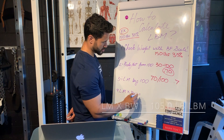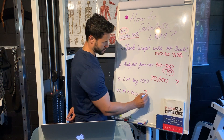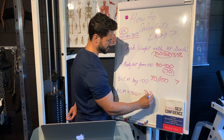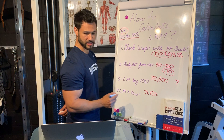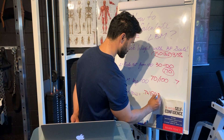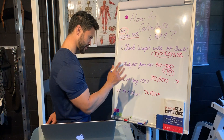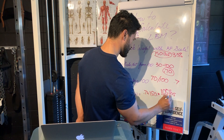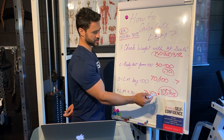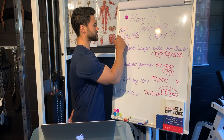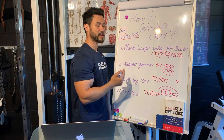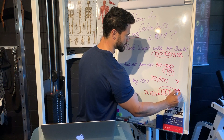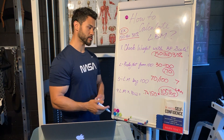Step four: take lean mass of 0.7 and multiply it by starting body weight of 150 pounds. That gives us 105 pounds of lean body mass. So this 150-pound, 30% body fat female client has 105 pounds of lean body mass.